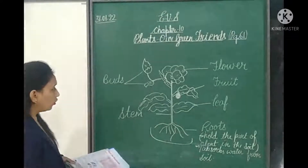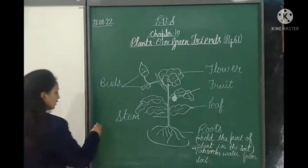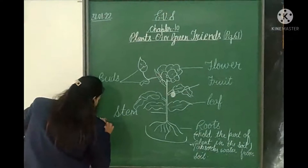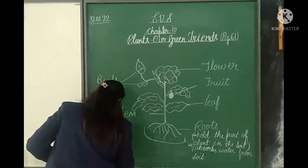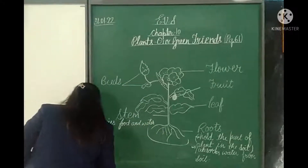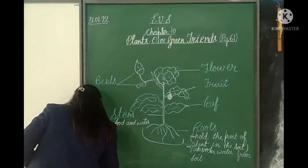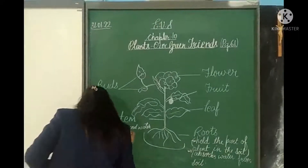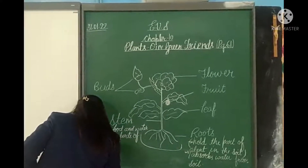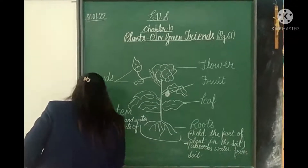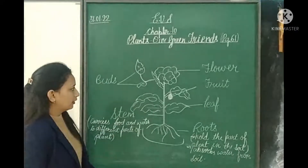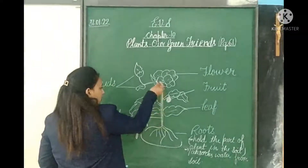Now let us see the role of the stem in the plant. The stem carries food and water to different parts of the plant. You can see that water and food go to different parts of the plant through the stem.